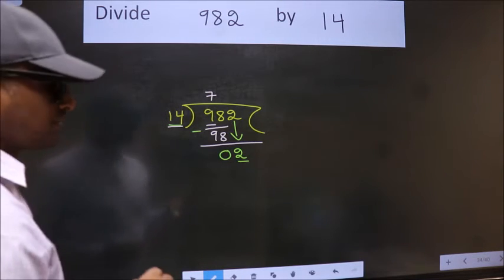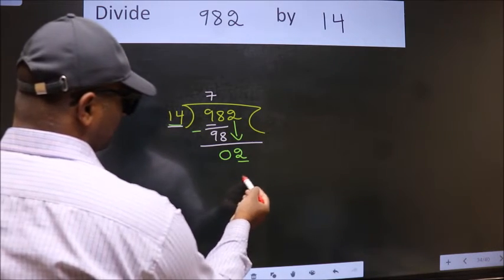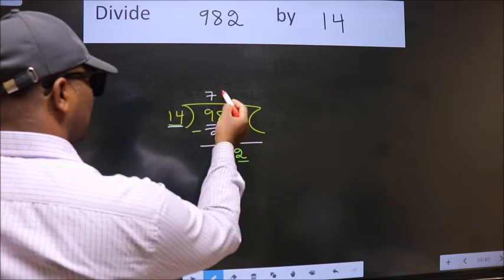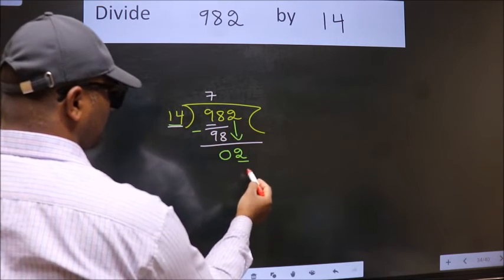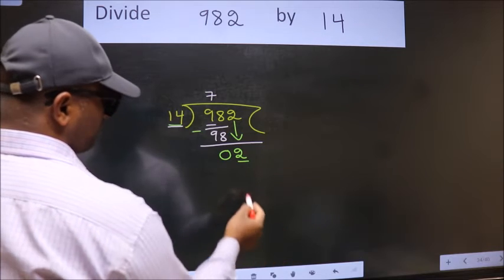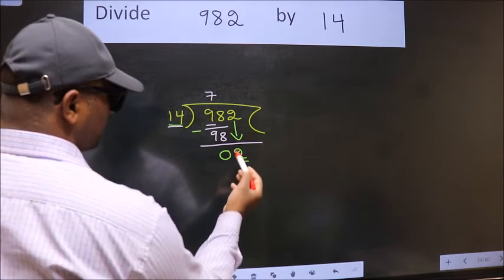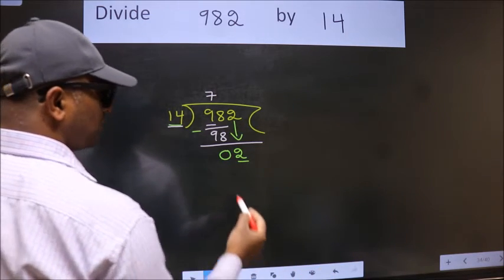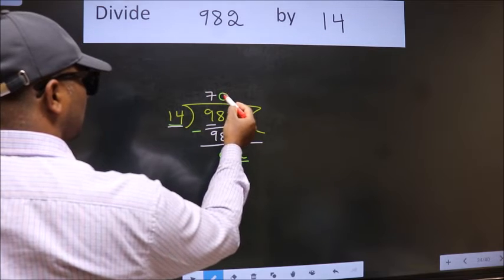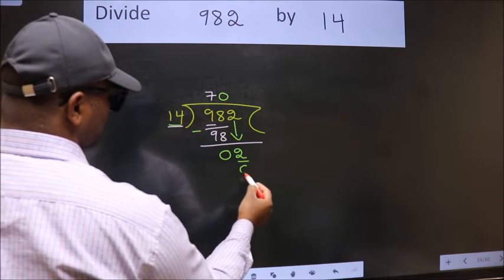Instead of that, what we should think of doing is, which number should we take here. If I take 1, we will get 14. But 14 is larger than 2. So what we do is, we take 0 here. So 14 into 0, 0.